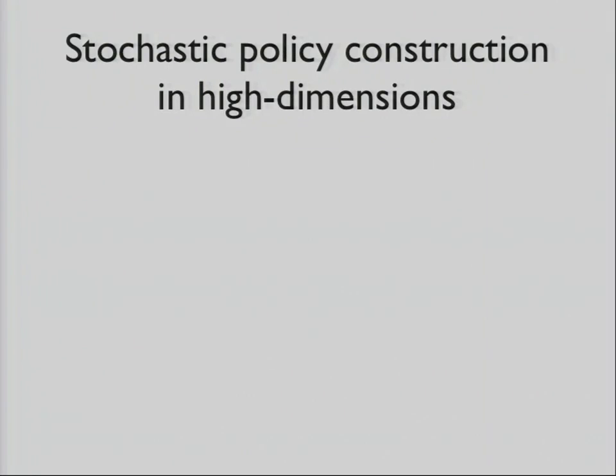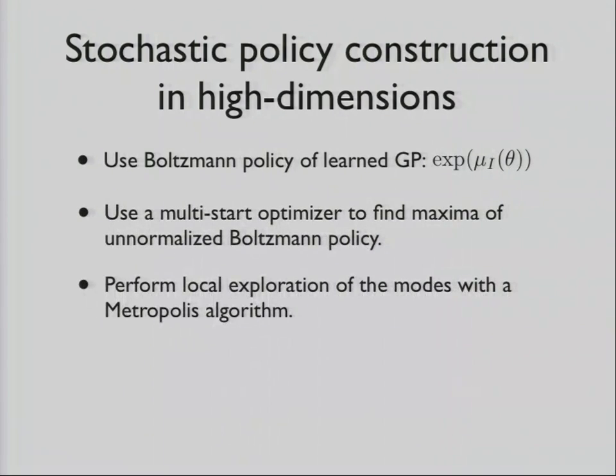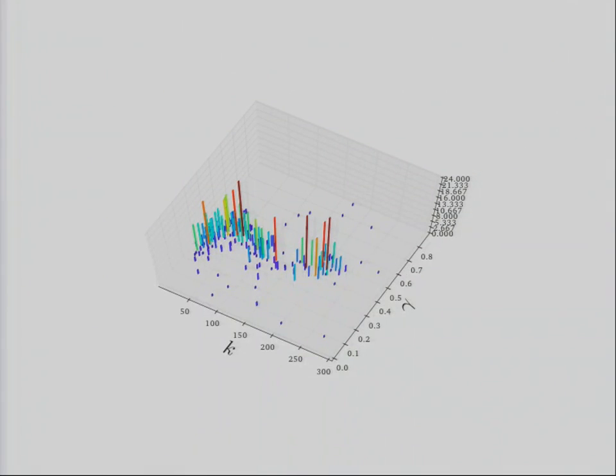How do we do this in high dimension? What we do is we use the modal policy of the learned GP. We just take the exponential of the mean function. And then we use a multi-start optimizer to find the maximum of that. And once again, it's cheap to query, so we can do that. You just perform local exploration and get a bunch of candidates. And then you can retain whatever number you want. We did resample and retain a certain bunch. And out of that, you get a policy, which is roughly proportional to the original surface.